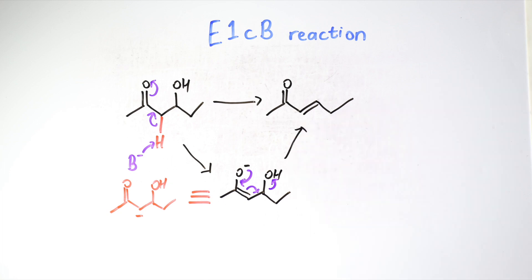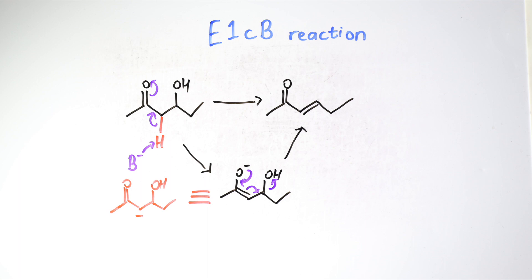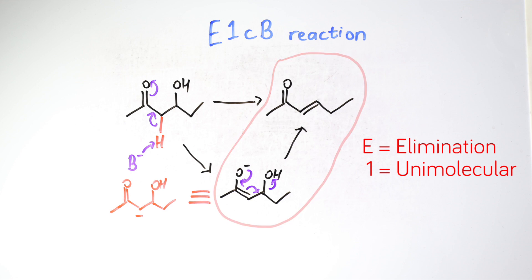To summarize, in E1CB the first step is deprotonation, which is the first part of the reaction. Then the elimination step of the anion is the rate-determining step. Looking at its name, E1CB stands for E for elimination, one means unimolecular so it only has one substrate in the rate law which is the elimination part.